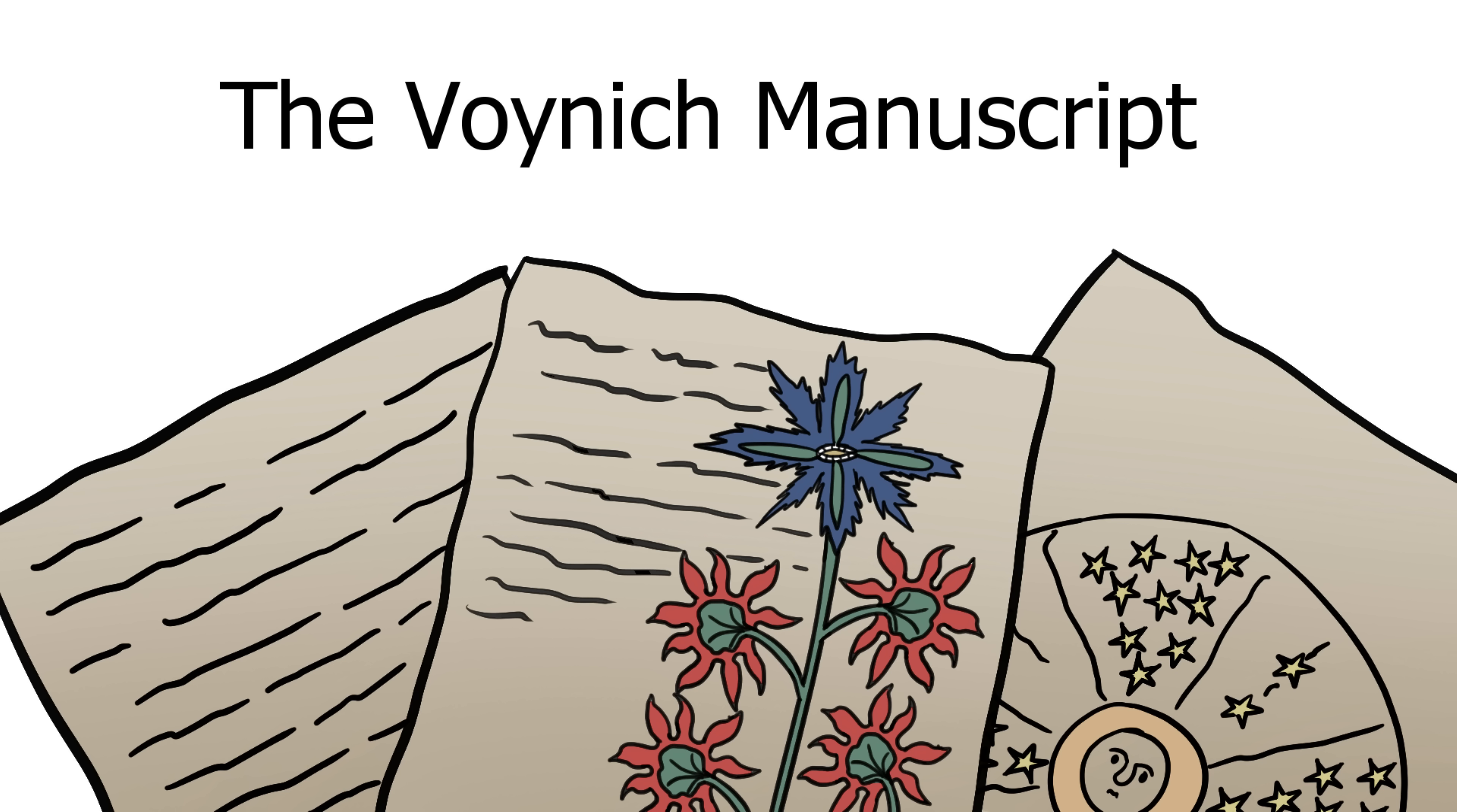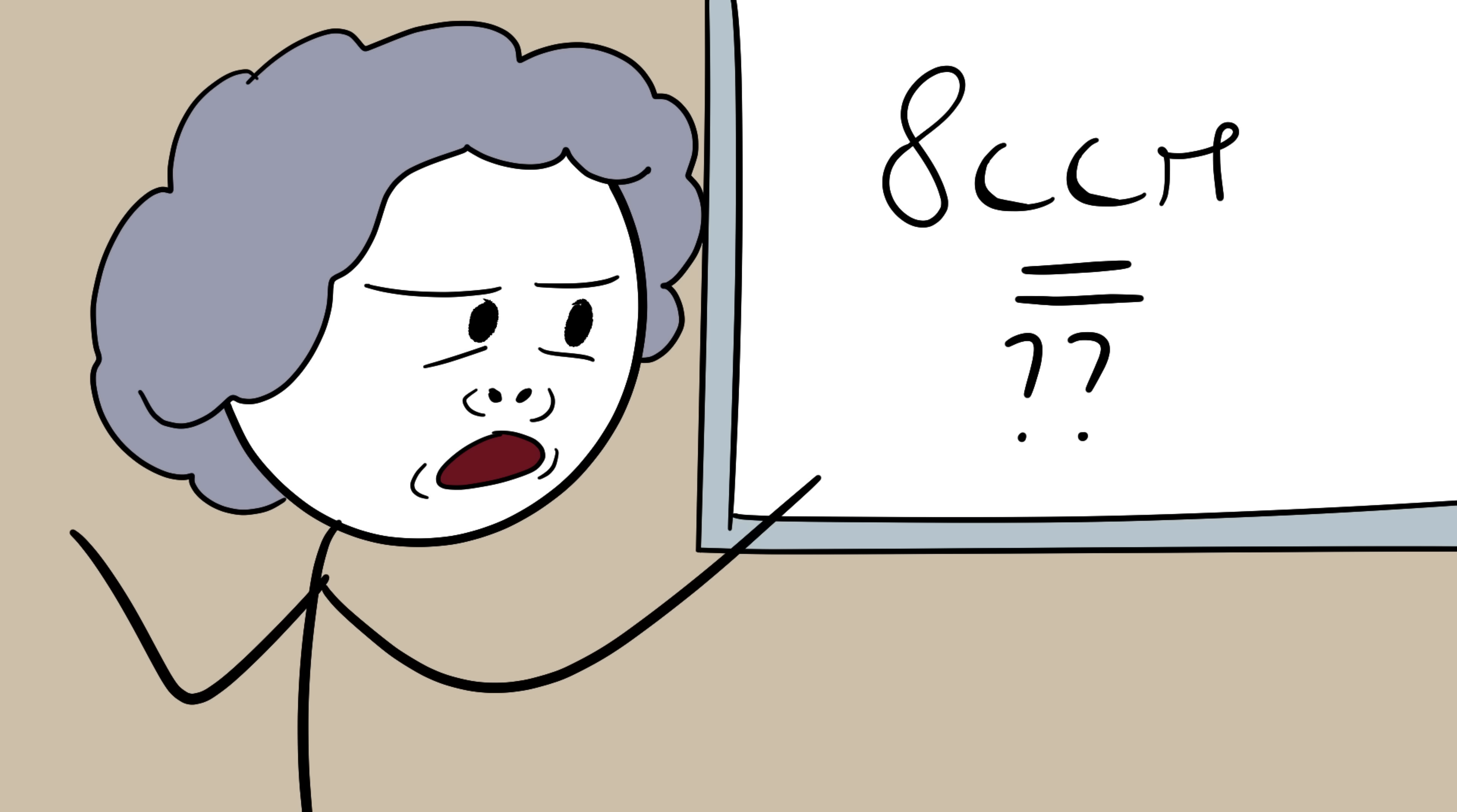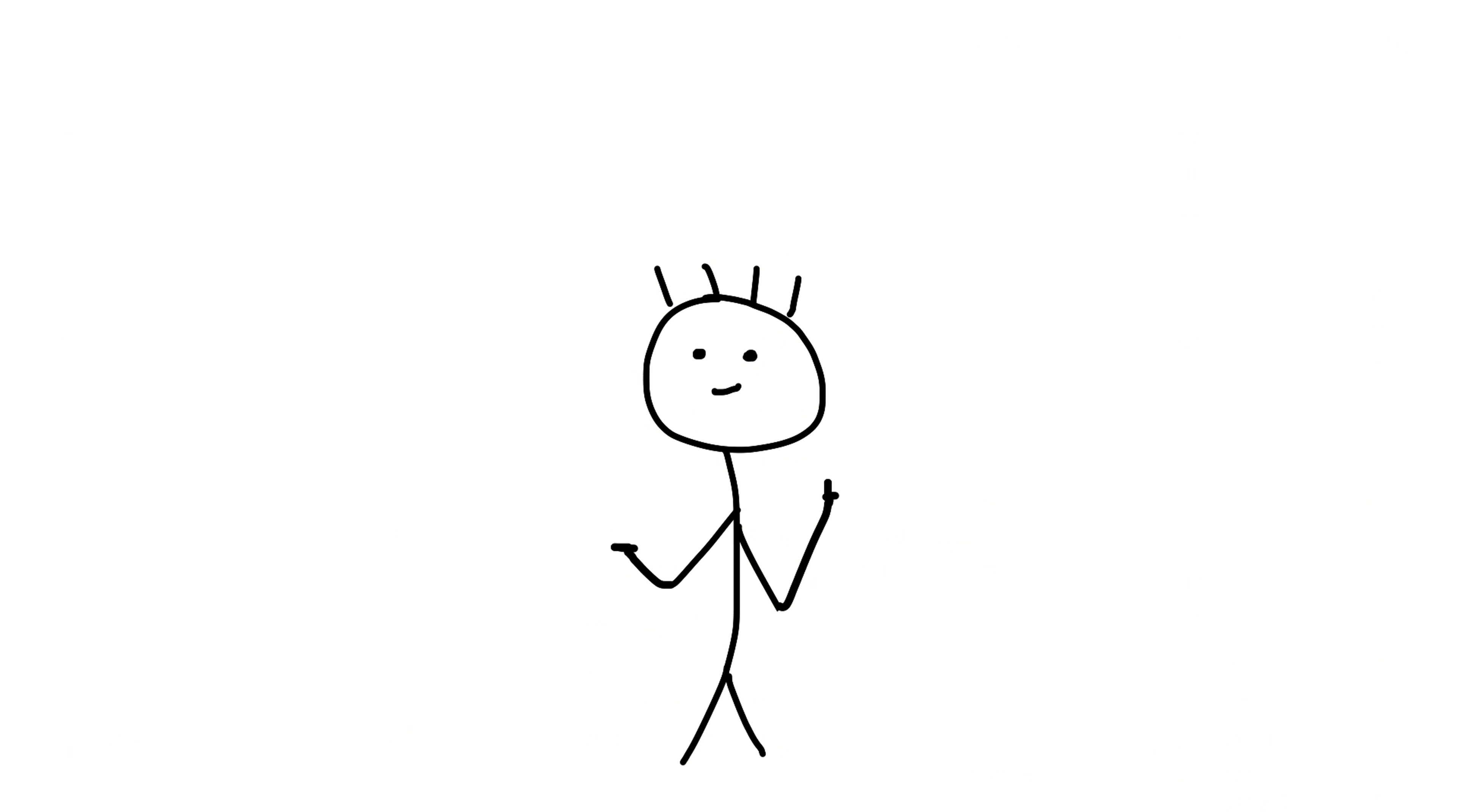Number 2. The Voynich Manuscript. The Voynich Manuscript is often called the world's most mysterious book. And for good reason. Found in 1912 by a rare book dealer, it's a 240-page codex written in a script no one can read. The letters don't belong to any known alphabet, yet they follow patterns too consistent to be random. It's like someone invented an entire language, like one we've never seen before or since.